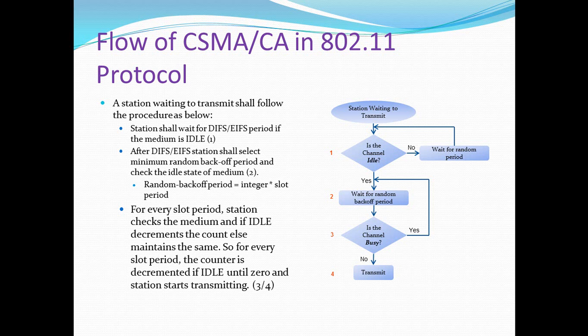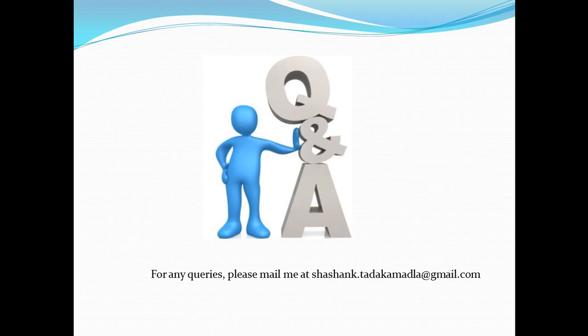From the previous sections you might have understood the concept of a station determining the state of the channel. Now let's look at the actual flow of a station accessing the channel and transmitting on it. A station willing to transmit shall first wait for the IFS or DIFS period if the medium is idle. After the IFS/DIFS period, the station shall select a random backoff period and decrease the backoff period counter while the channel is idle. If the channel becomes busy, the backoff period remains the same. Once the backoff period reduces to zero and the station finds the channel is idle, it transmits the packet. This is how CSMA/CA is implemented in the 802.11 protocol.